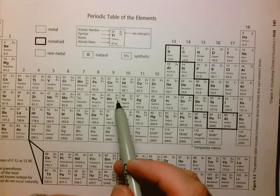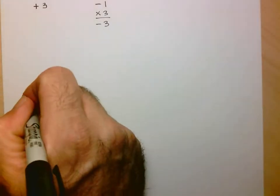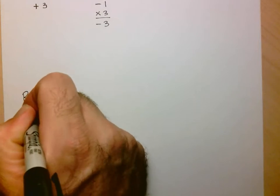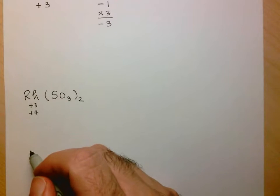So it can have a plus 3 charge or a plus 4 charge. So let's indicate that here, it's either plus 3 or plus 4. So this is the type of work you could show on a test to show your strategy and your thinking.